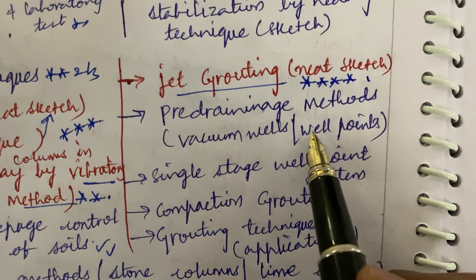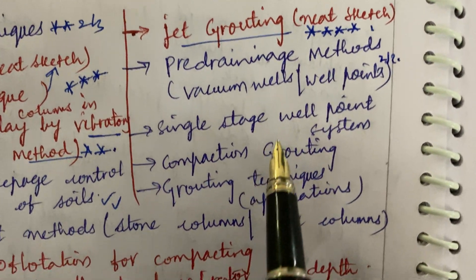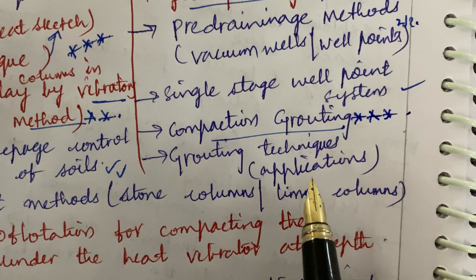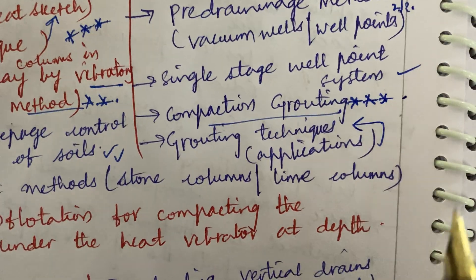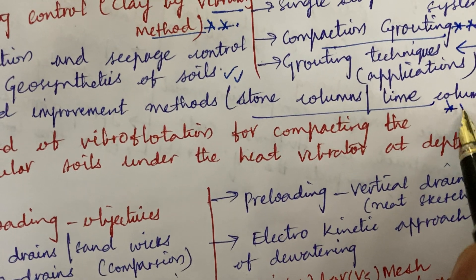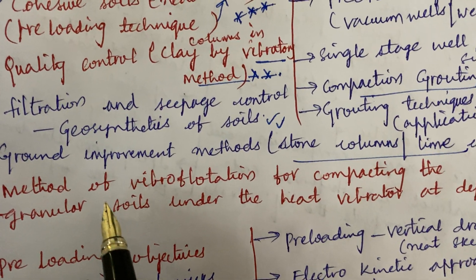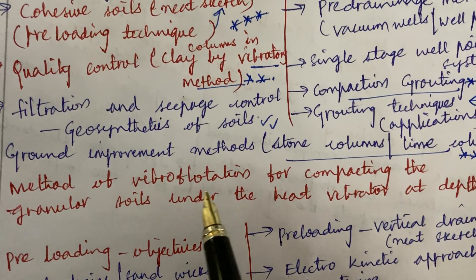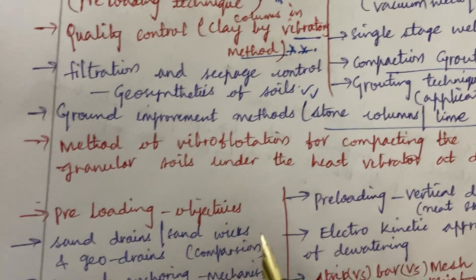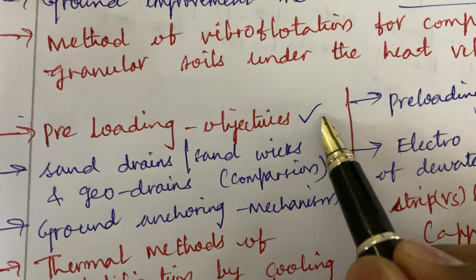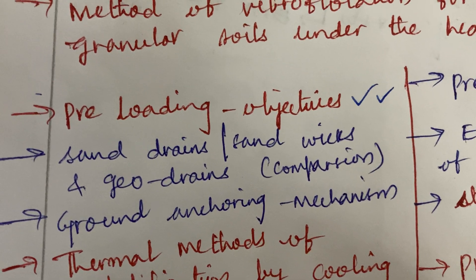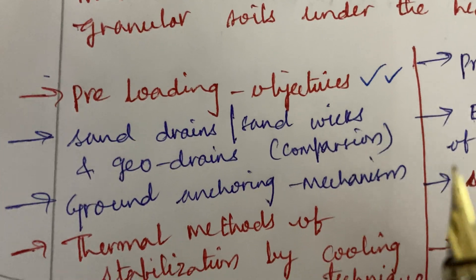Pre-draining methods and vacuum wells and well points may be a 2 to 3 mark question. Single stage well points and compaction grouting is a 3 mark question. Define grouting techniques and their applications is a 5 mark question. Ground improvement methods related to stone columns and lime columns is one of the topmost questions. Methods of vibroflotation for compacting granular soils under a vibrator at depth may be a direct 10 mark question. Pre-loading objectives are also important. The course is all about theory — work out each parameter with a neat diagram where required, written in point-wise only.